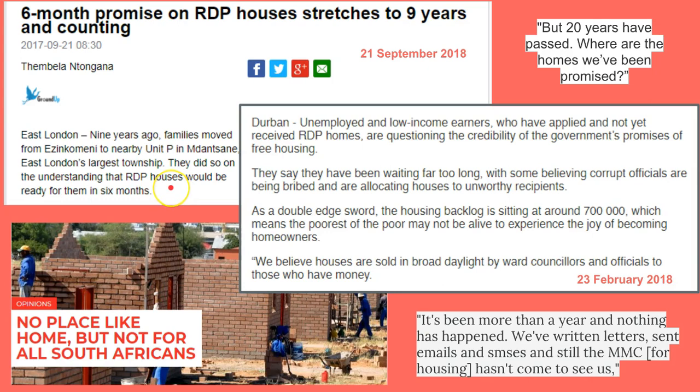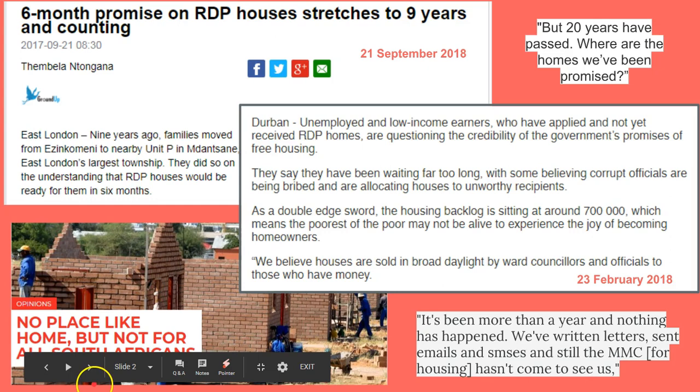Families were moved out of a township nine years ago and they're still waiting for their houses. If you delve a little bit deeper into the topic, you'll see that some of the blame falls with corruption, bribery—people taking money to build these houses but not building them or building inadequate houses by cutting costs. It's quite a topical topic.